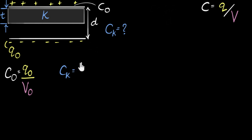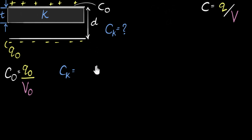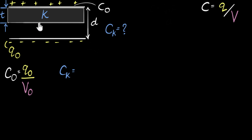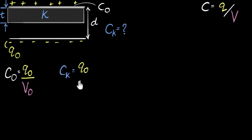Imagine we use insulated gloves so no charge transfer happens to our hands, and let's say the capacitor is not connected to any circuit — capacitance doesn't depend on that. Under these conditions, because this is an insulator the charge cannot move, and my hands were insulated too. So the charge on each plate cannot move, meaning the total charge stays the same. The charge on the new capacitor is still Q₀.